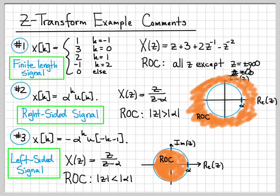We'll also turn our attention to a signal type we haven't dealt with yet — namely a double-sided signal. What about signals that go infinitely to the left and infinitely to the right? We've done signals that exist to the right and signals that exist to the left, but we haven't tried to find a Z-transform of a signal that has non-zero samples infinitely to the left and to the right. That's something we still need to tackle.